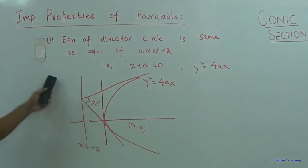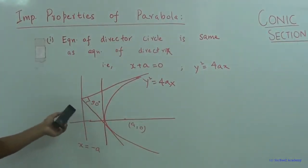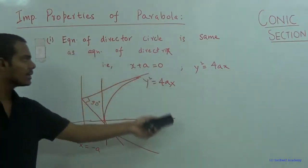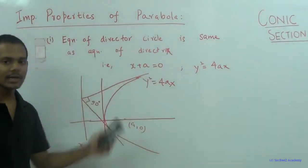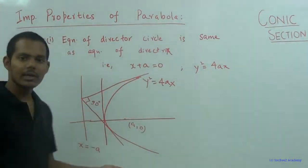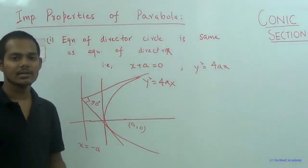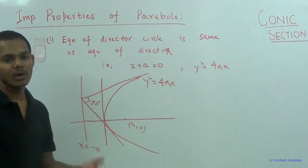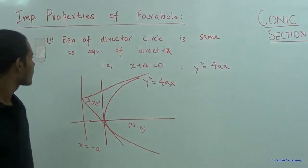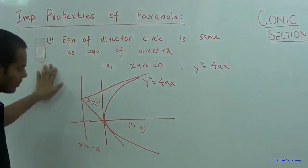This is a very important property of the parabola — that the equation of the director circle is the same as that of the directrix. This won't happen in any other conic section such as ellipse or hyperbola. So this is the first property.